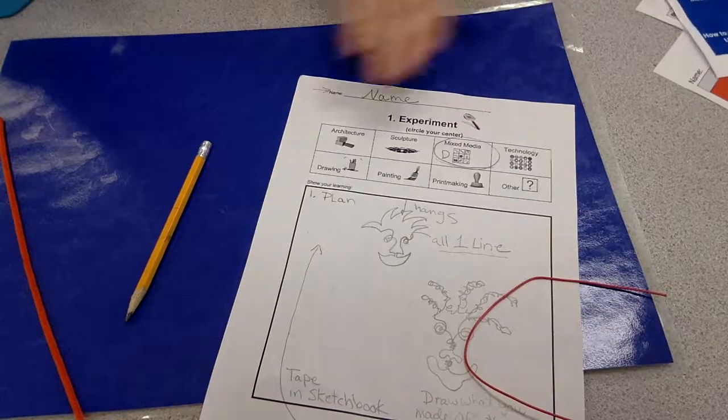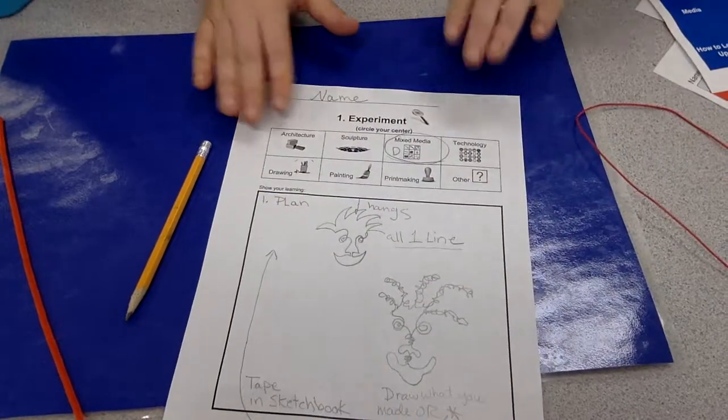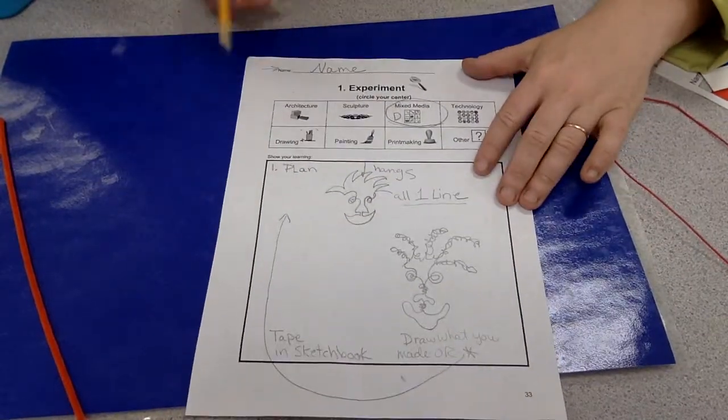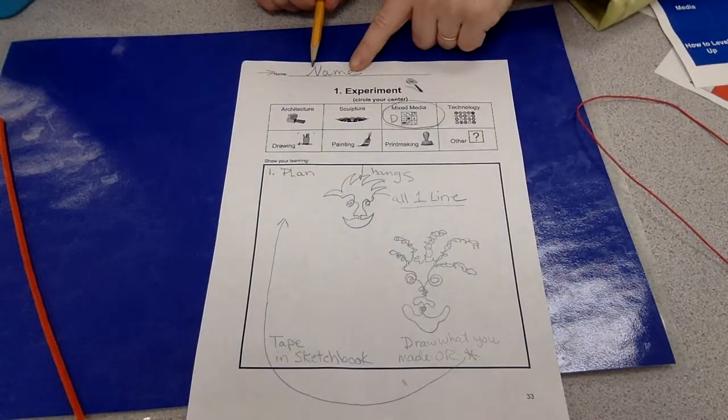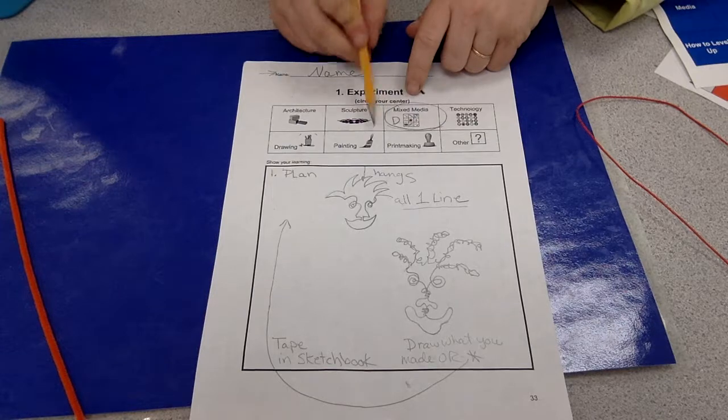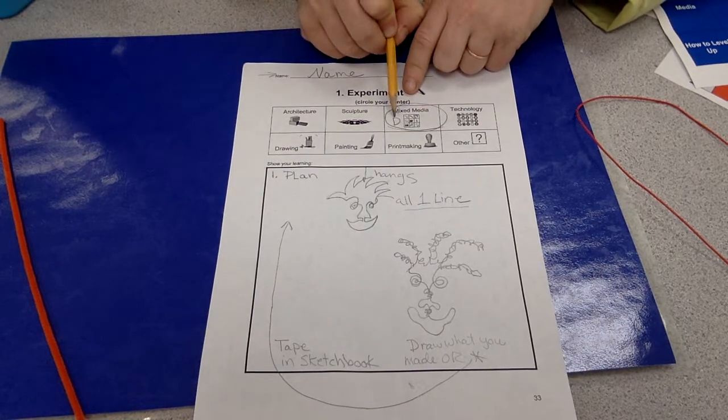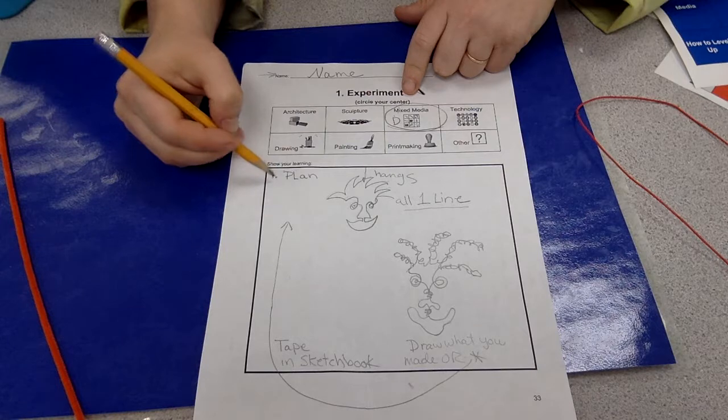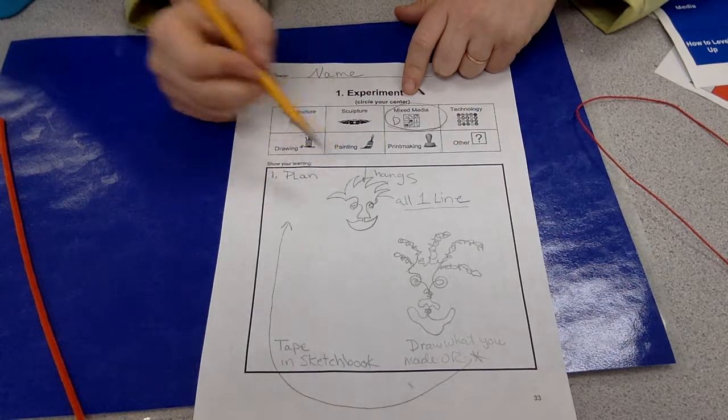Okay, so we're going to go ahead and go to our sketchbook page. And in our sketchbook page, we are of course writing our name. We are then going to circle mixed media center level D. Next, I'm going to write a number one, and I'm going to plan out my art.